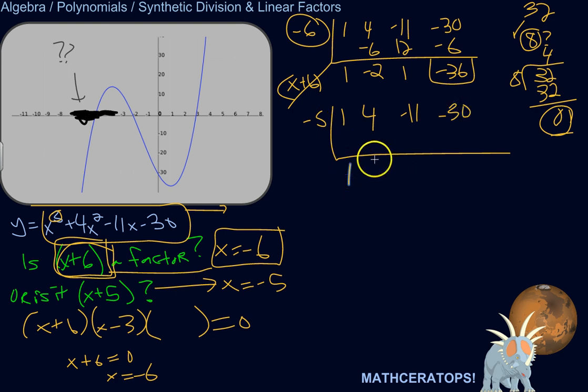Step 1, bring this guy down. 1 times negative 5 is negative 5. 4 plus negative 5 is negative 1. Negative 1 times negative 5 is 5. Negative 11 plus 5 is negative 6. Negative 6 times negative 5 is 30. Negative 30 plus 30 is 0. That's that last number there.